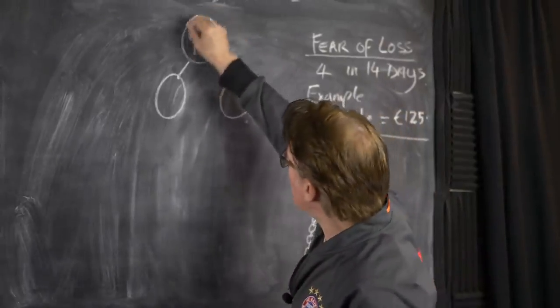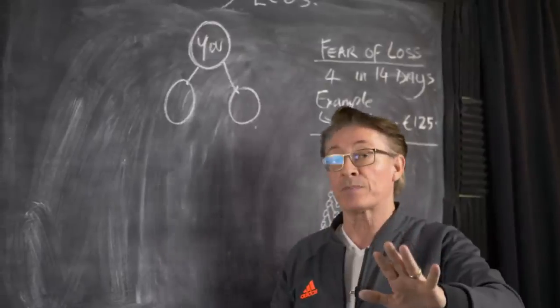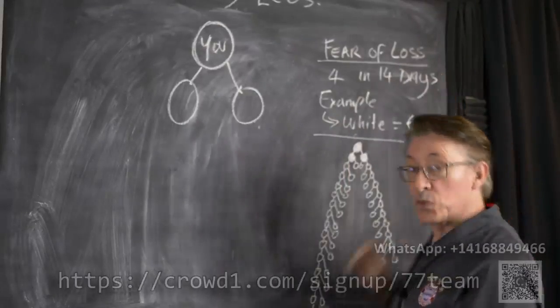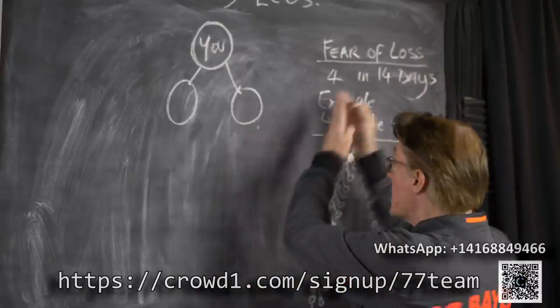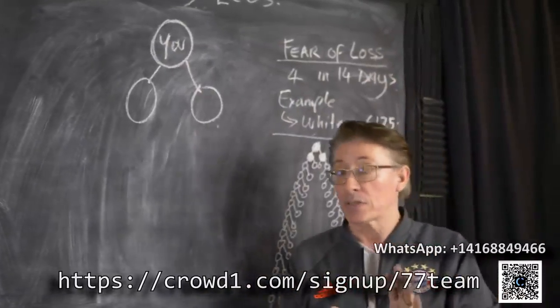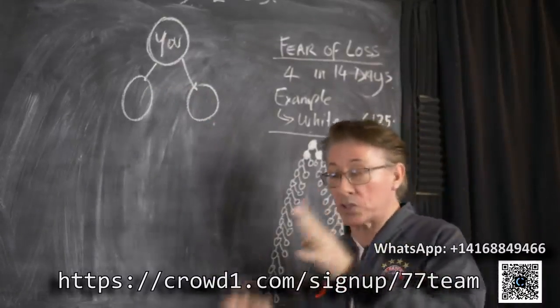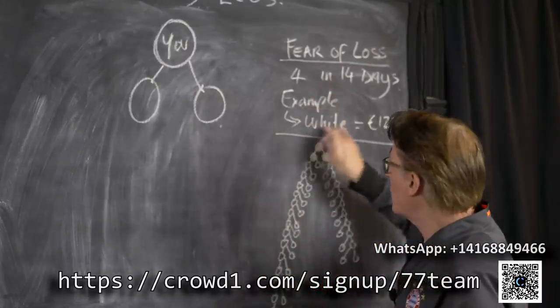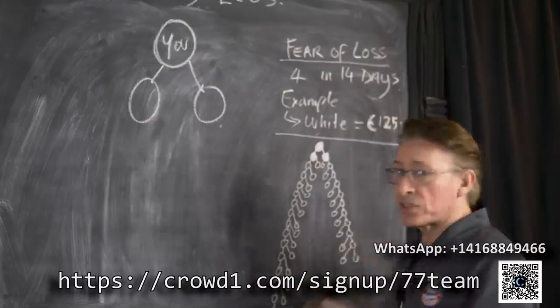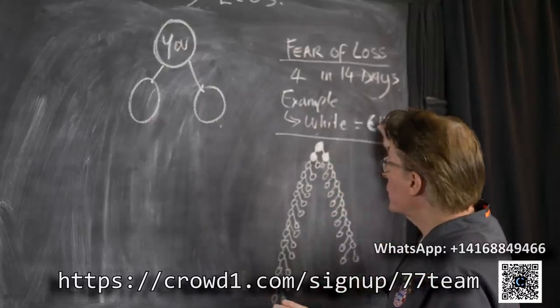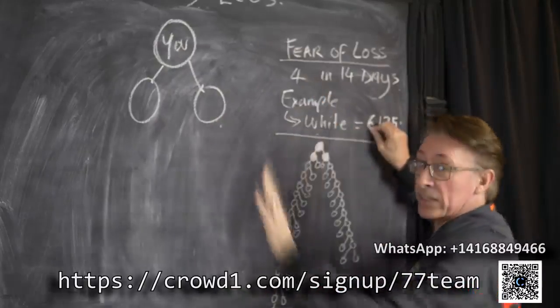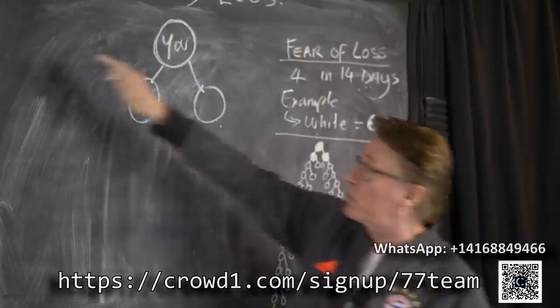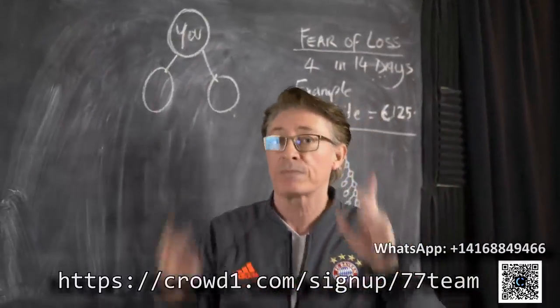When you first sign in and you buy your pack into Crowd1, a timer starts and you'll have 14 days. If you can bring in four people within that time frame of 14 days, for example, let's say you personally sponsor four people and those four people buy a white pack, you would make euro-wise 125 euros. Now remember, if it's eight days in and you've brought the four people in, you still have to wait until the 14-day timer runs out, then you're gonna get in your account that 125 euros. Are we clear on that so far?